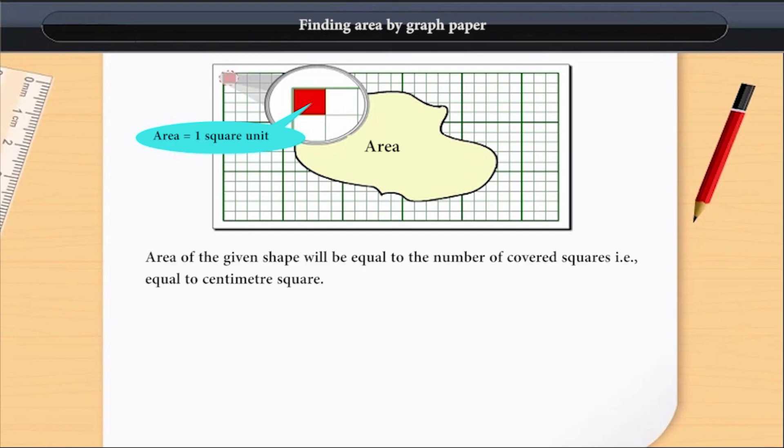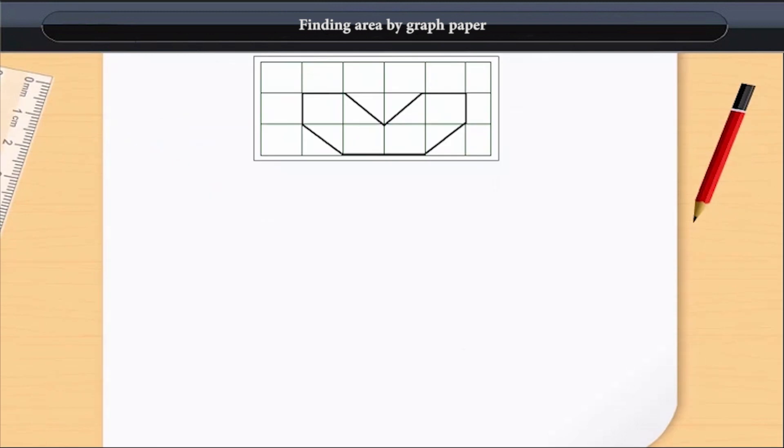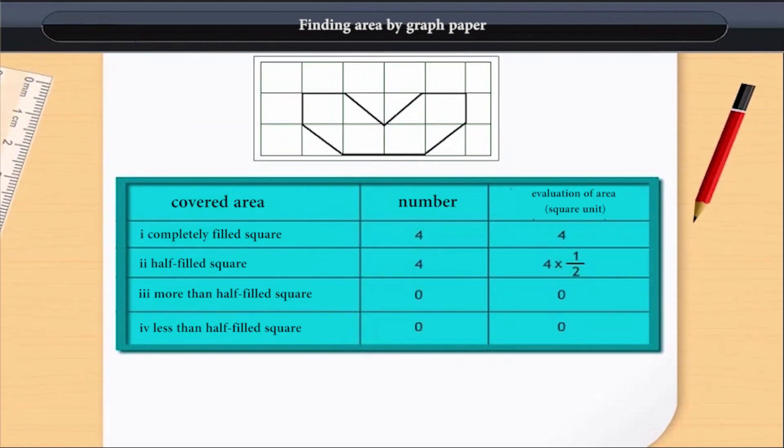Every side of the square is 1 cm. Now, we see those squares which have been covered by a shape. Area of the given shape will be equal to the number of covered squares, that is, equal to centimeter square. We see that some squares are completely covered,